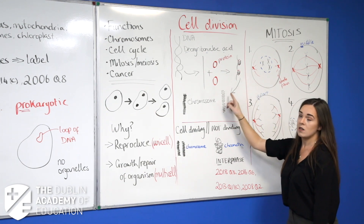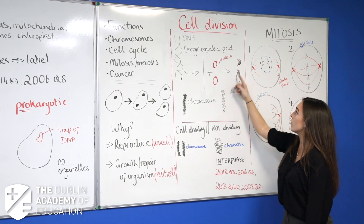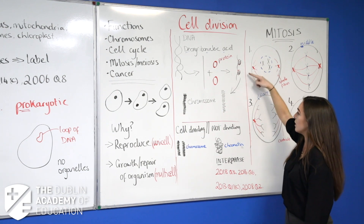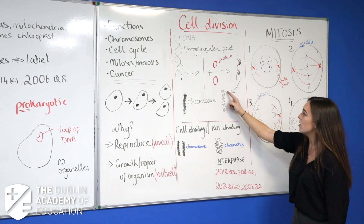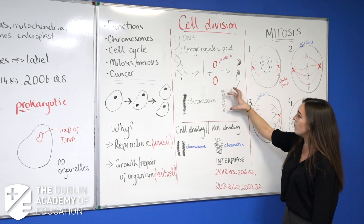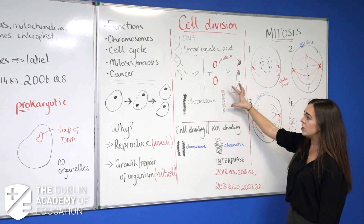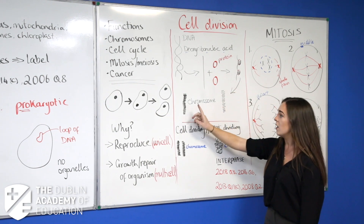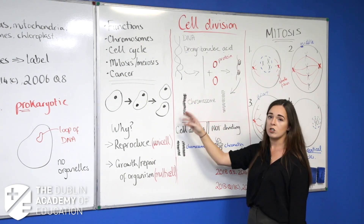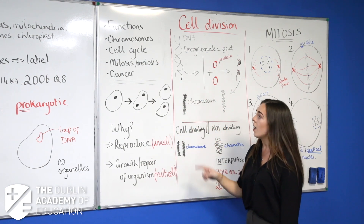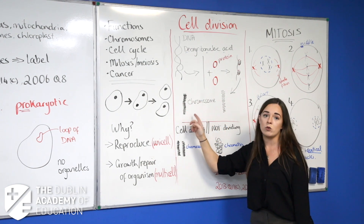What happens then is those wrapped strands start to fold over each other — folding, condensing, folding, condensing — until eventually they make a structure called your chromosome.